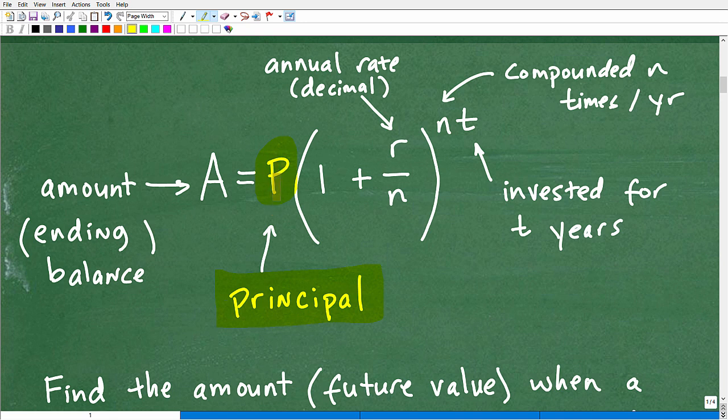Over a period of time, that investment is going to grow. When it's invested with compound interest, that principal amount will grow to an ending amount. So A is the amount that we eventually grow that investment to. We start with P dollars and we're going to end up with A dollars. That would be our ending balance.